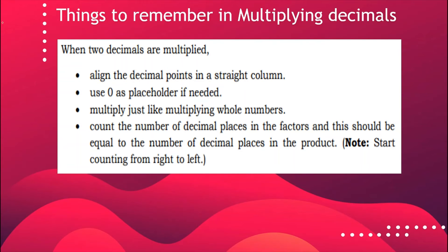Here are the things to remember in multiplying decimals: multiply just like multiplying whole numbers, use zero as a placeholder if needed, and count the number of decimal places in the factors — this should be equal to the number of decimal places in the product. Note: start counting from right to left.